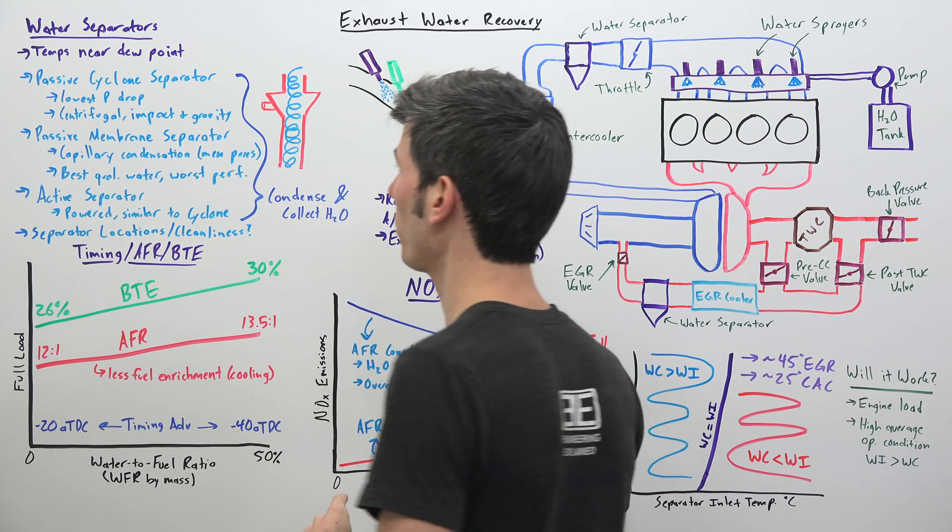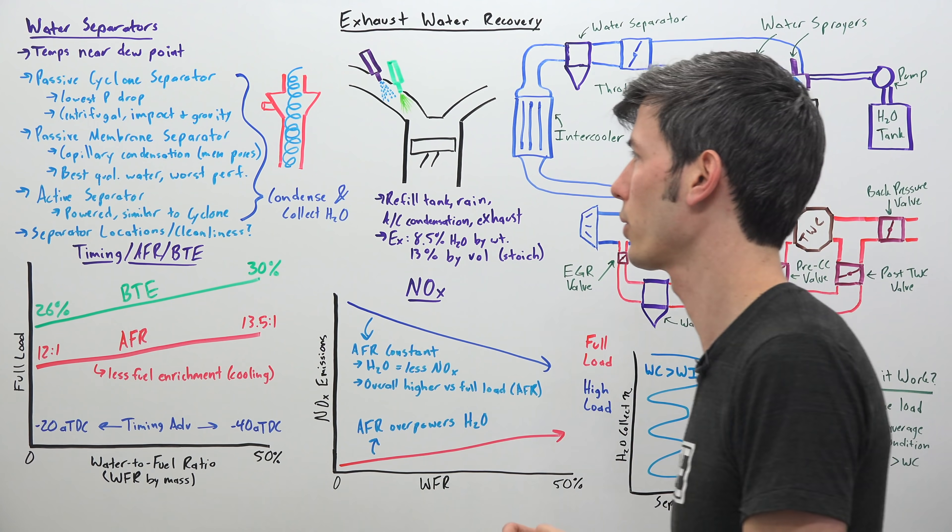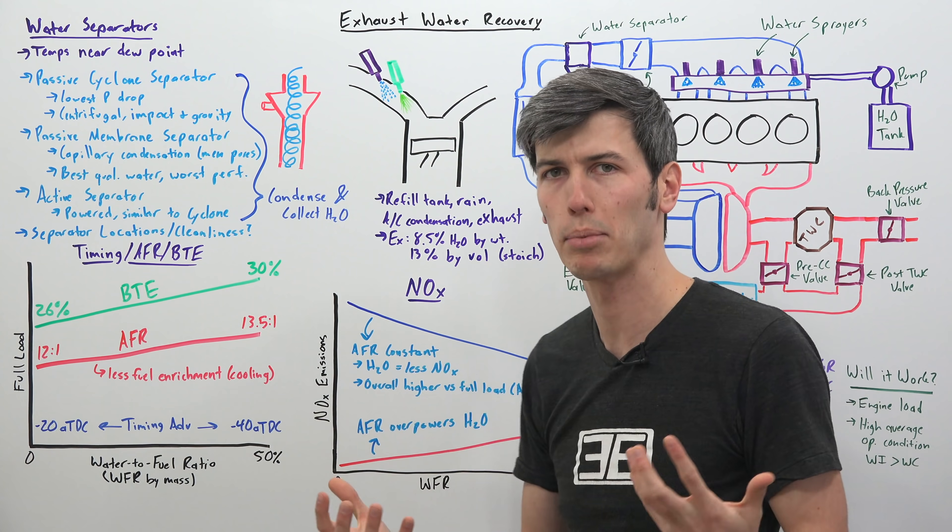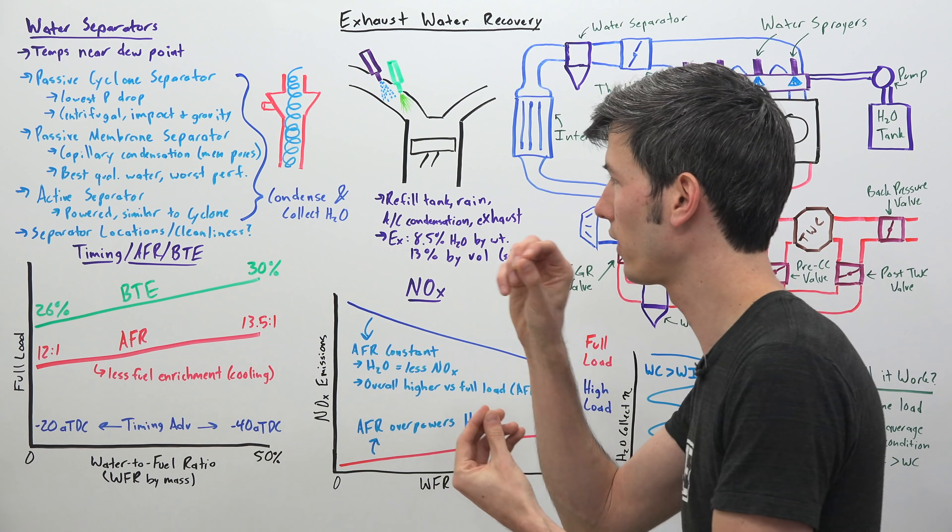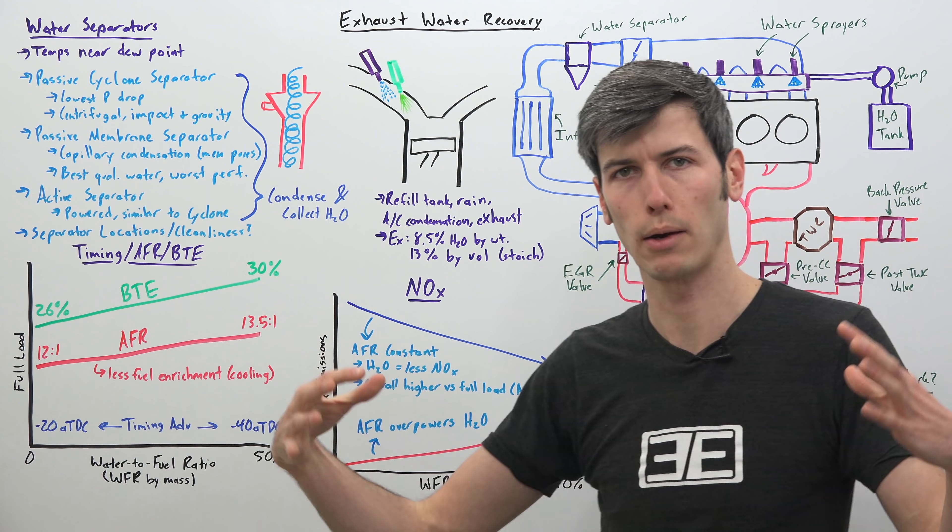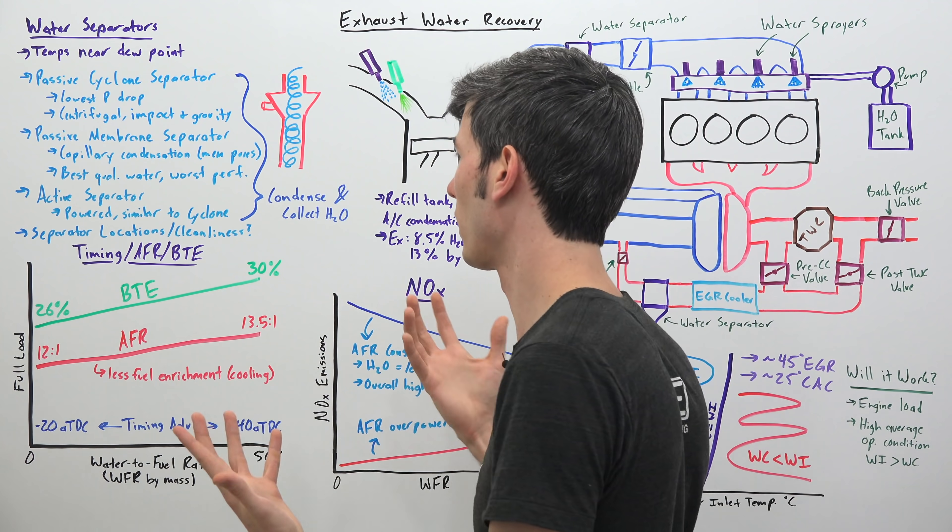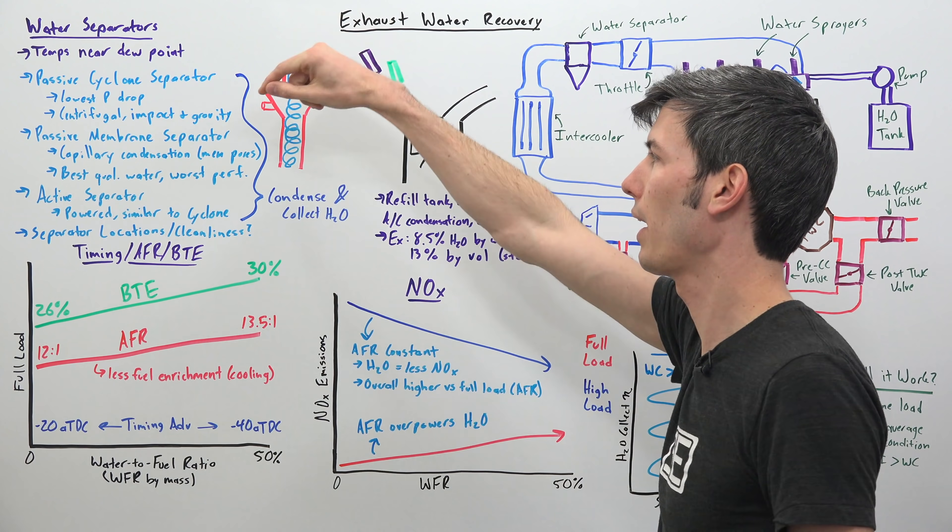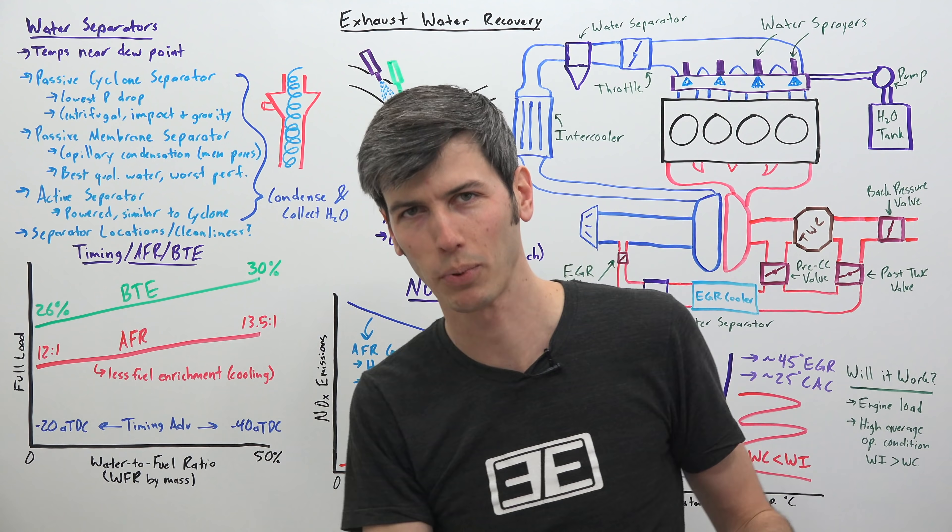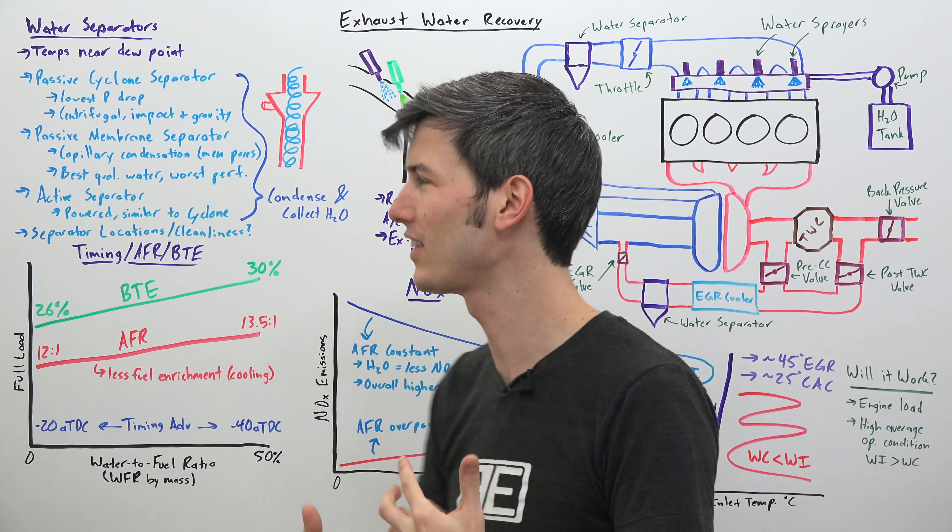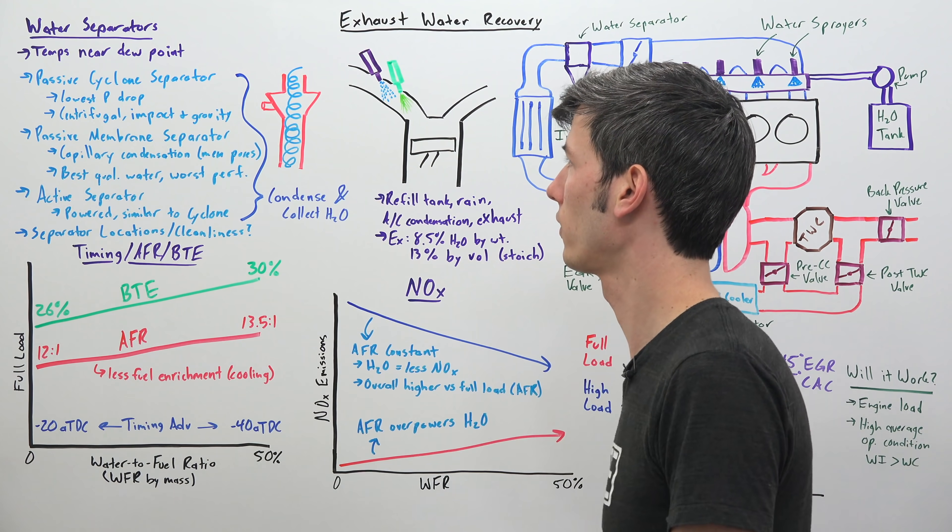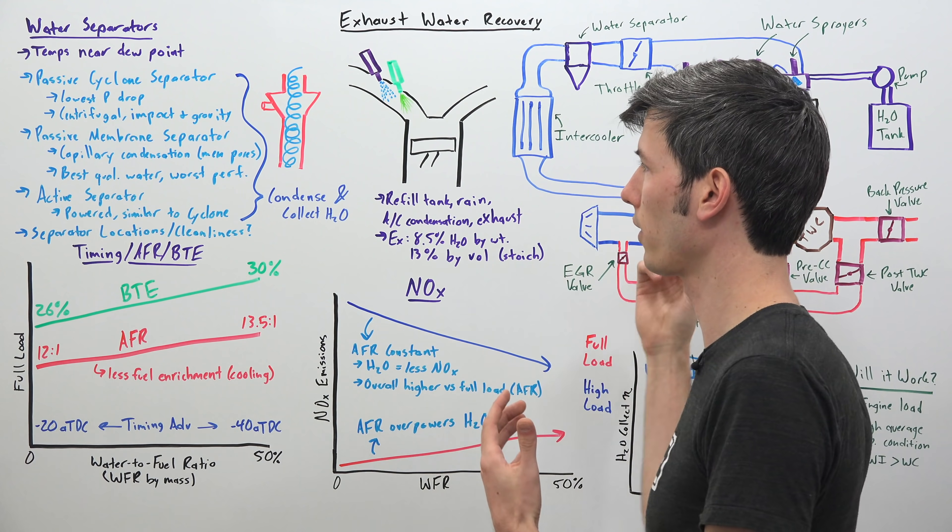So they found the cyclone separator, the passive cyclone separator had a low pressure drop. They also tried using a passive membrane separator. This uses capillary condensation. Essentially it's got these really fine pores in a membrane that help collect that condensation kind of similar to how a tree pulls water up through the trunk using capillary action and they found this passive membrane separator offered them the best quality water. However, it also had the worst performance meaning it collected the least amount of water.